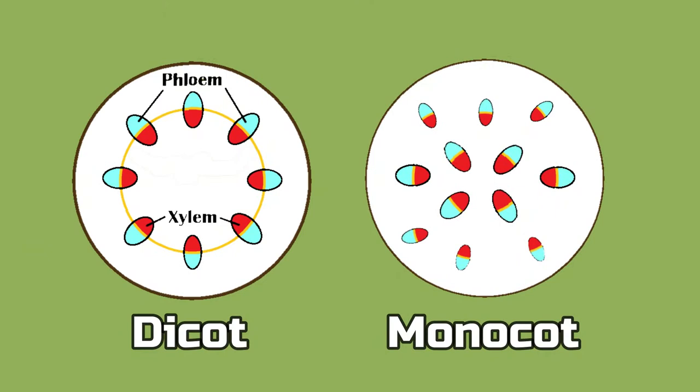Number four: the vascular bundles — or xylem and phloem — in monocots are scattered throughout the plant's stem or leaves, whereas dicots' vascular bundles are found in a ring. If you'd like a refresher to learn more about the vascular system, you can check out our video on the topic — I'll put the link right here for you.